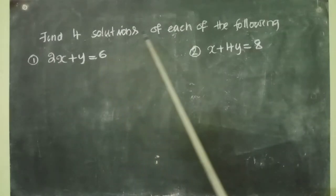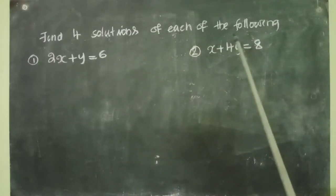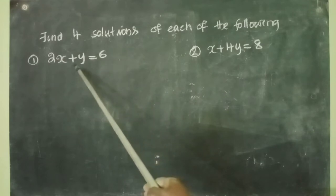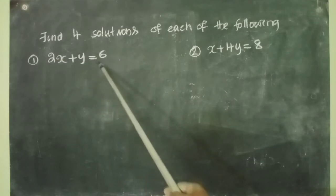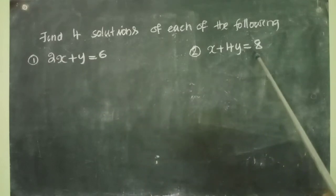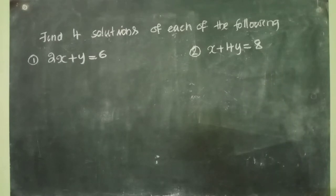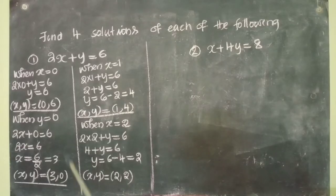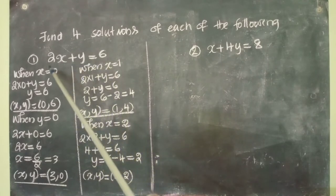Next question: find 4 solutions of each of the following. First: 2x plus y equal to 6. Second: x plus 4y equal to 8. We have studied how to find out the solutions of linear equations in two variables. All of you find it out. So I found 4 solutions for the first equation.